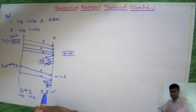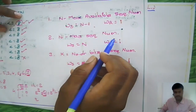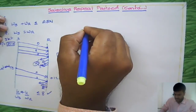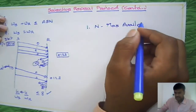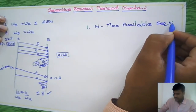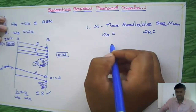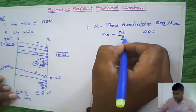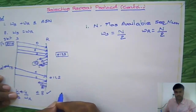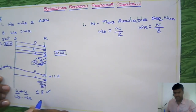Now let us derive the formulas as we did in Go-Back-N. Case 1: suppose n is the total available sequence numbers. Then window size of sender equals window size of receiver equals n divided by 2. In our example, total sequence numbers are 8, so window size of sender and receiver will each be 8/2 = 4.